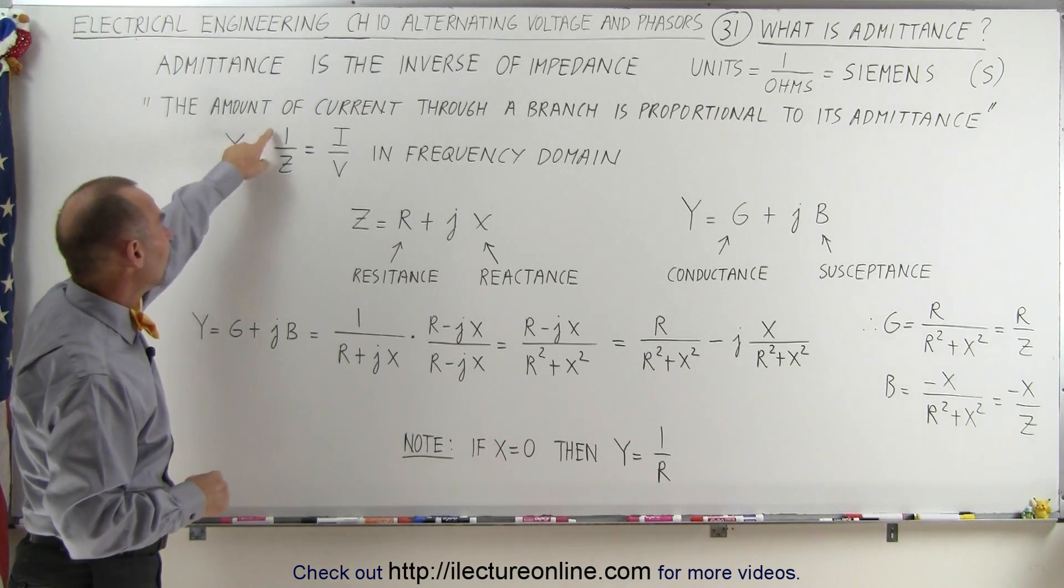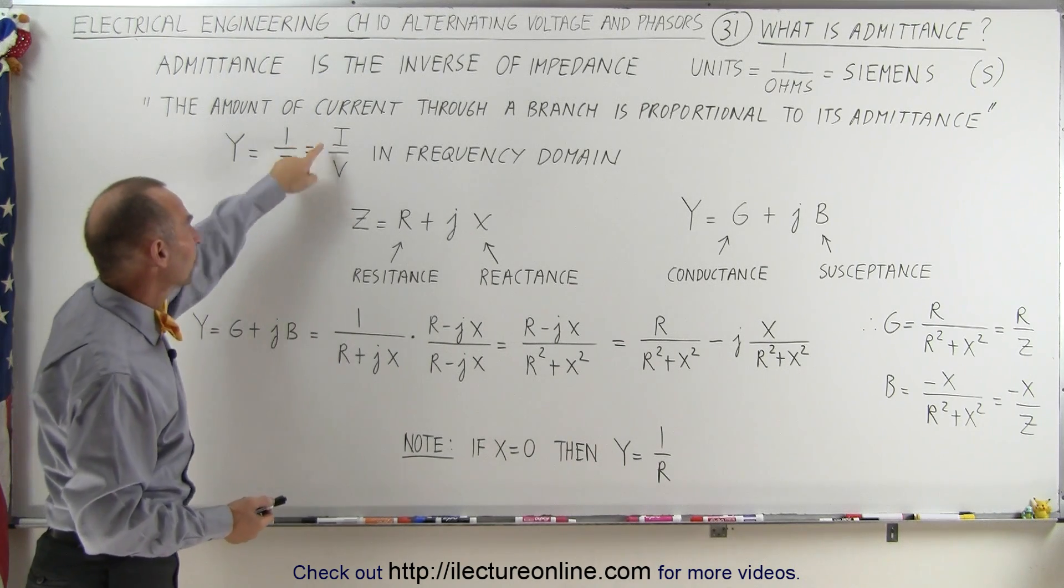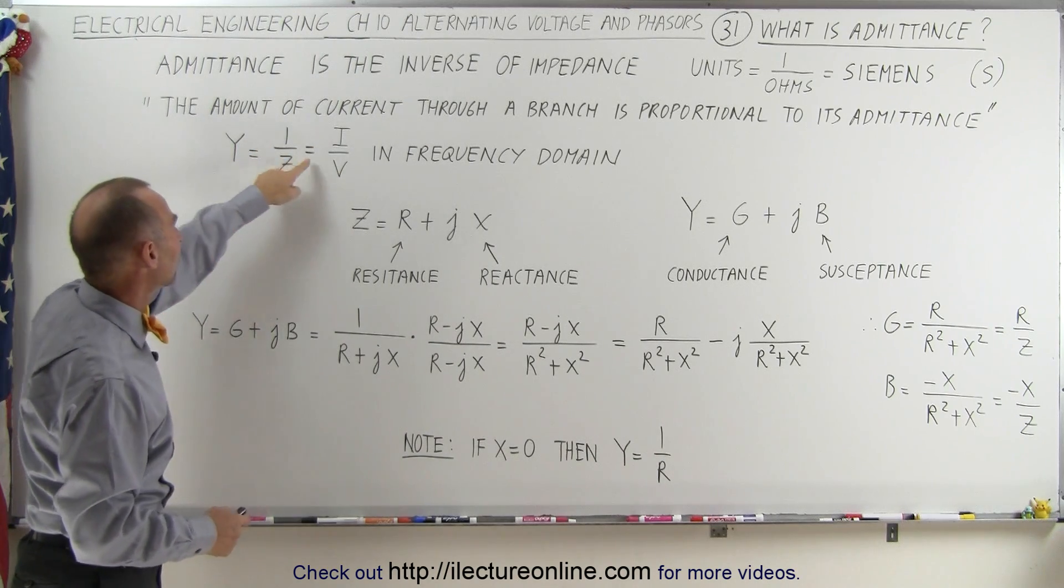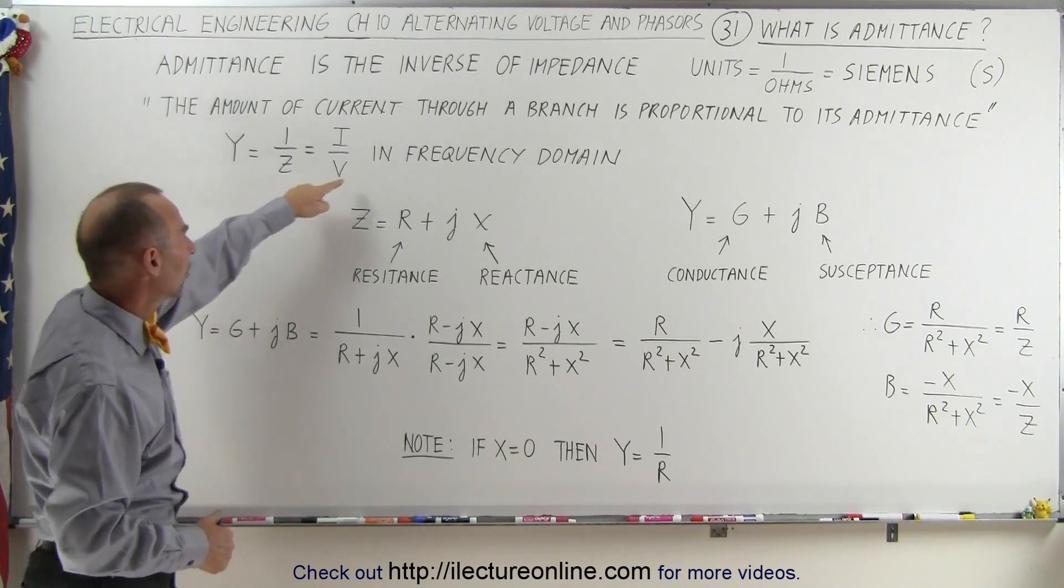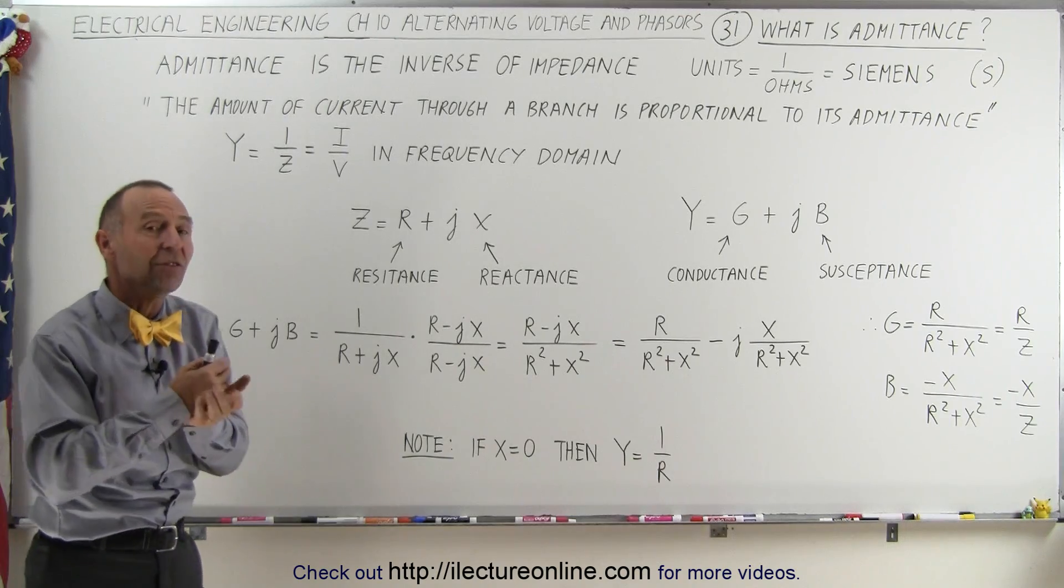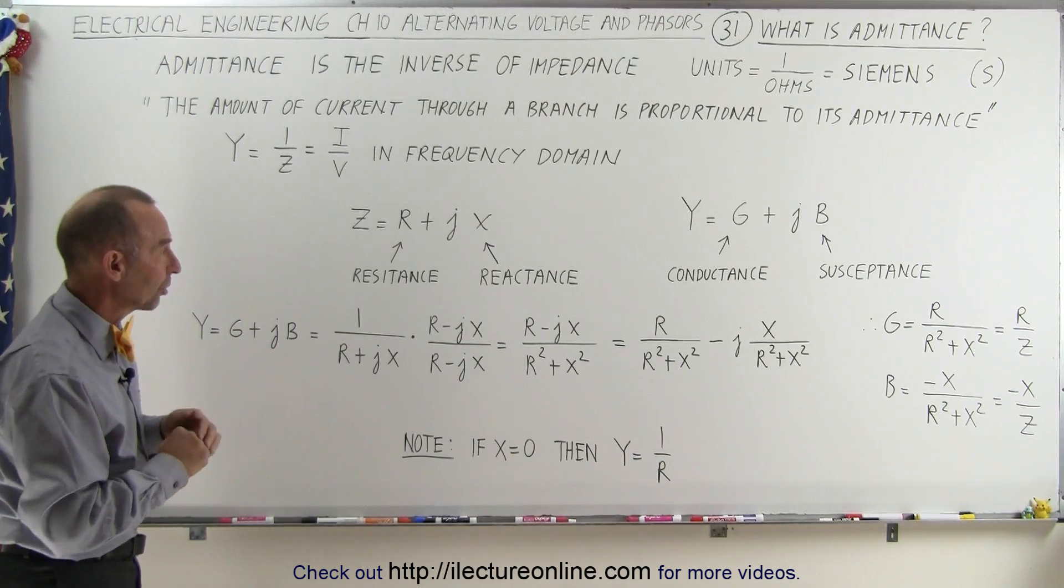Admittance is equal to one over the impedance, the inverse of impedance, and so therefore is equal to the current divided by the voltage. Therefore, the admittance is definitely proportional to the current in the circuit. This equation refers to the frequency domain, because just like impedance, admittance does have a phase angle depending upon the elements in the circuit.